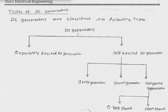In a compound generator, we have the long shunt generator and short shunt generator. In the short shunt, one part of the field winding is parallel to the armature winding, and both of them are in series with another part of the field winding. In a long shunt, the armature winding is in parallel with one part of the field winding, and that combination is in series with another part of the field winding.